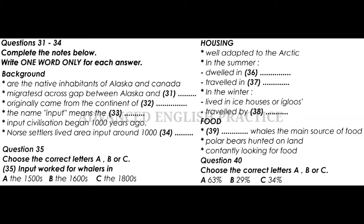Good afternoon. In our lecture today, we will continue our study of people who inhabit the northernmost regions of the world. Our focus will be on the native inhabitants of Alaska and Canada — the Inuit Eskimos. They have been called the native inhabitants as the Inuit were the people who had most recently migrated across the gap between Alaska and Siberia.